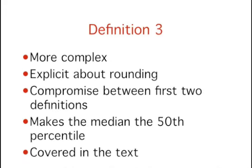There is a third definition that, despite being more complex than the other two, has several advantages. First, it is explicit about rounding. Second, it represents a compromise between the first two, resulting in a value between them. Finally, it allows the median, a measure of central tendency, to be defined as the 50th percentile.